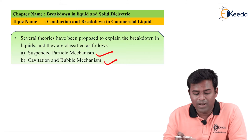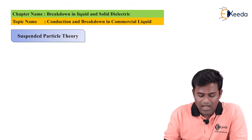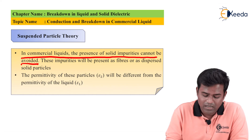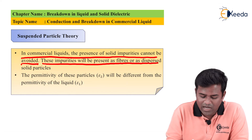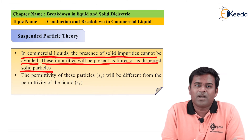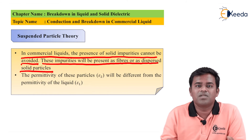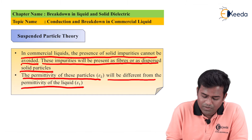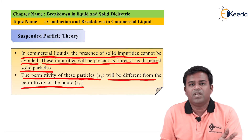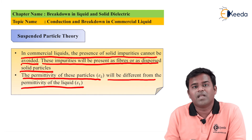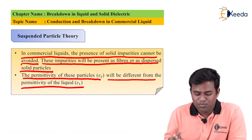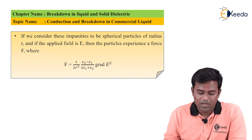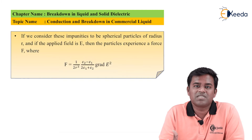In the suspended particle mechanism, the presence of solid impurities in commercial liquids cannot be avoided. These impurities are present as fibers or dispersed solid particles — not uniquely combined, but dispersed throughout the liquid. The permittivity of these particles, ε₂, is different from the permittivity of the liquid, ε₁. In the cavitation bubble theory, ε₂ will always be the greater value.